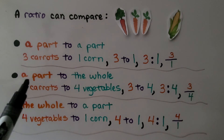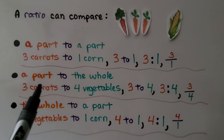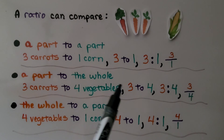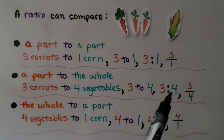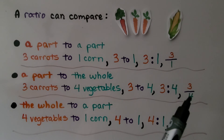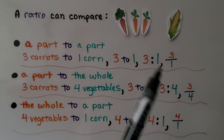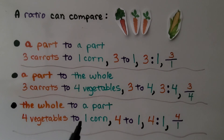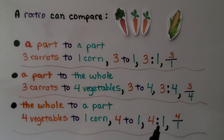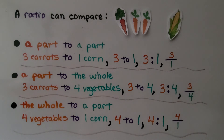A ratio can compare a part to the whole. There are three carrots to four vegetables — written as 3:4, three to four, or three-fourths. We can say three-fourths of these vegetables are carrots. A ratio can also compare the whole to a part — four vegetables to one corn, written as 4:1 or four over one as a fraction.